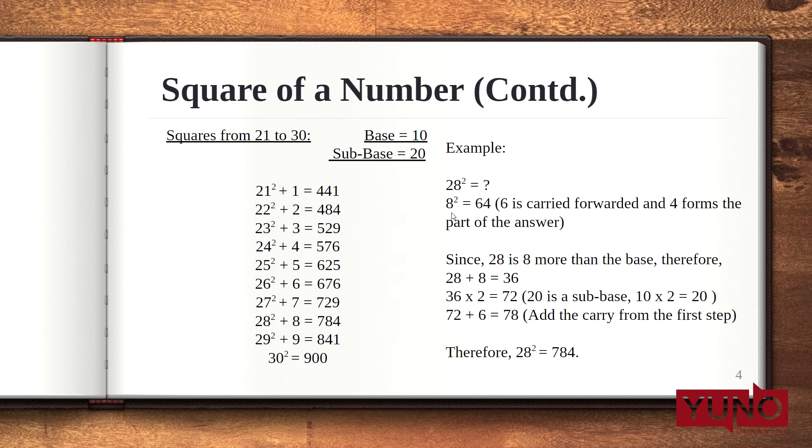Now, let's see how we can follow this method up to 29. To calculate the square of 28, the first step is calculate square of 8 because 28 is 8 more than the sub base, which is 64. Now, 4 forms the right side of our answer. That means the ones place and 6 is carry forwarded. Since 28 is 8 more than the base, we add 28 plus 8, which is 36.